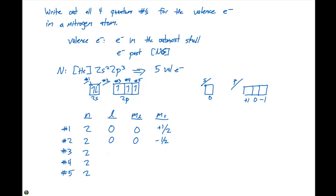When we look at electrons three, four, and five, they're going to have the same principal quantum number because they're in the same subshell — a 2p orbital. For a p orbital, the l quantum number is always 1, so each of these electrons will have an l value of 1. Each of these electrons are all spin up, so we're going to have a +1/2 spin for each of the three electrons.